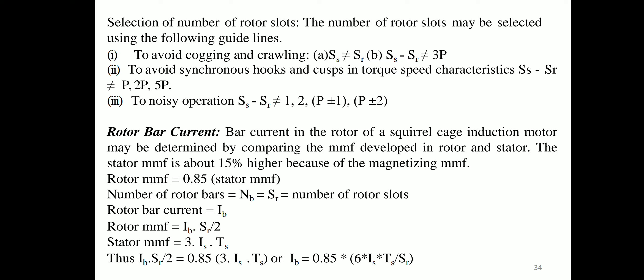Rotor bar current is determined by comparing MMF developed in rotor and stator. The stator MMF is about 15% higher due to magnetizing MMF, so rotor MMF = 0.85 × stator MMF. Number of rotor bars Nb = Sr. Rotor MMF = Ib × Sr / 2. Stator MMF = 3 × Is × Ts. Thus: Ib × Sr / 2 = 0.85 × 3 × Is × Ts, giving: Ib = 0.85 × 6 × Is × Ts / Sr.